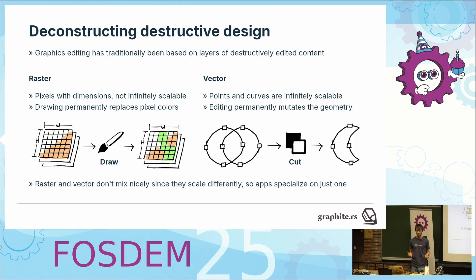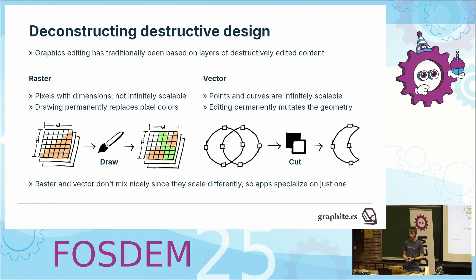In graphics design, we have generally two main data types. We have raster data, which is your general pixel-based data — so if you take a photo with your camera, that's raster data. And we have vector data, which is a clean mathematical representation of your shapes.